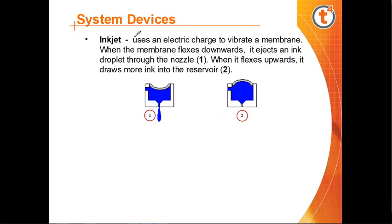In an inkjet printer, an electric charge is used to vibrate a membrane. When the membrane flexes downward, it ejects an ink drop through the nozzle. When it flexes upward, it draws more ink into the reservoir.